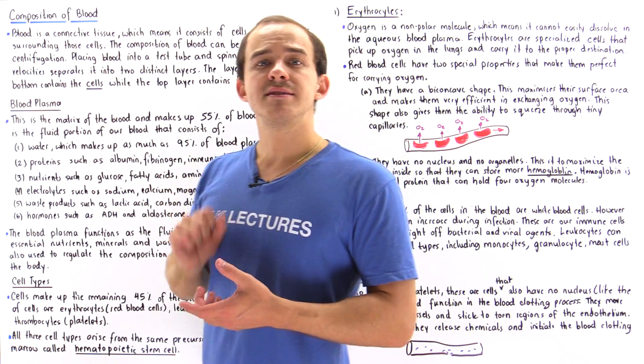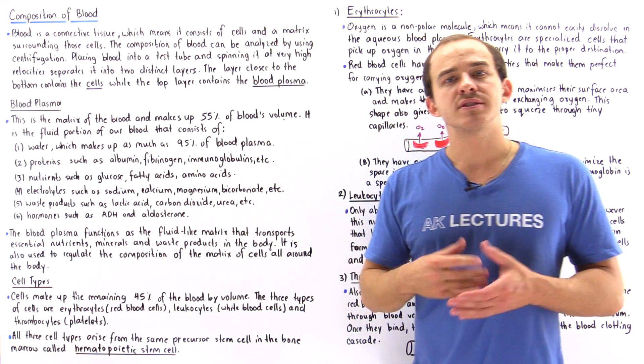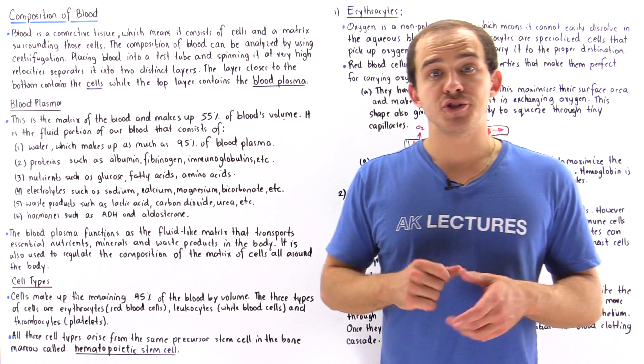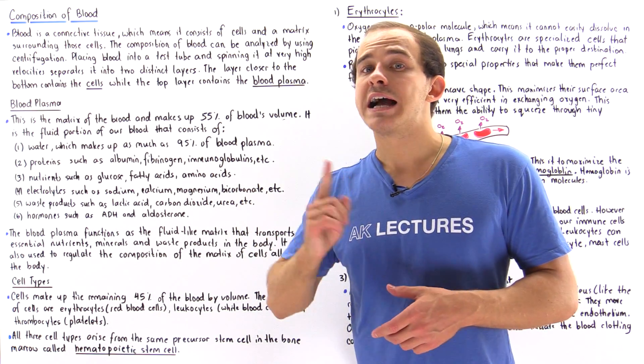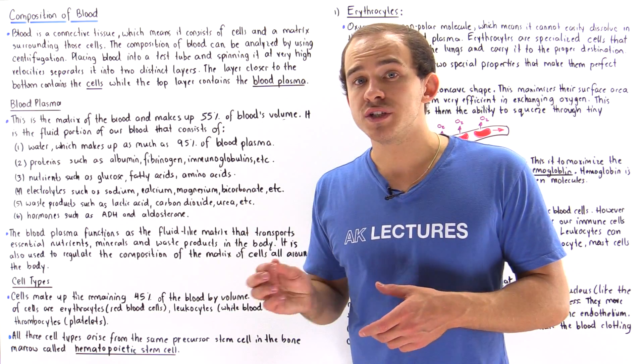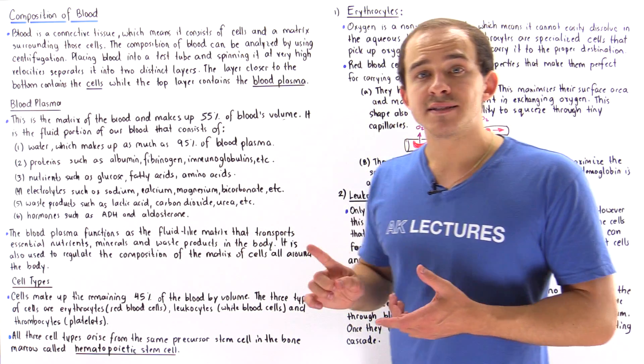Now in order to study the composition of our blood we can use the process of centrifugation. So we take a test tube, we place the blood inside that test tube and we place it inside our centrifuge machine and what the machine does is it spins our test tube at very high velocities and that separates the things found inside our blood by density.